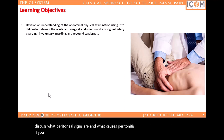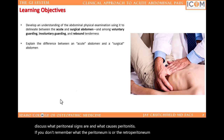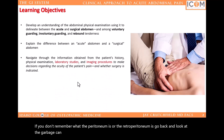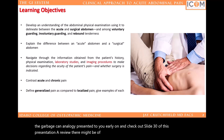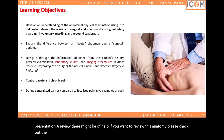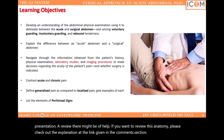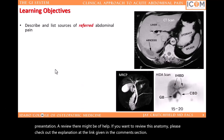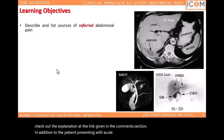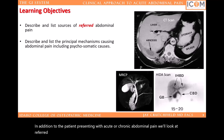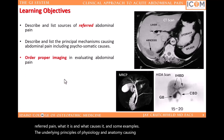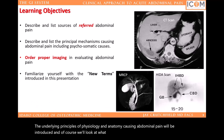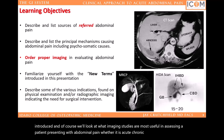If you don't remember what the peritoneum or the retroperitoneum is, go back and look at the garbage can analogy presented early on and check out slide 30 of this presentation. If you want to review this anatomy, please check out the explanation at the link given in the comments section. In addition to the patient presenting with acute or chronic abdominal pain, we'll look at referred pain — what it is, what causes it, and some examples. The underlying principles of physiology and anatomy causing abdominal pain will be introduced, and we'll look at what imaging studies are most useful, whether it is acute, chronic, referred, psychological, or otherwise.